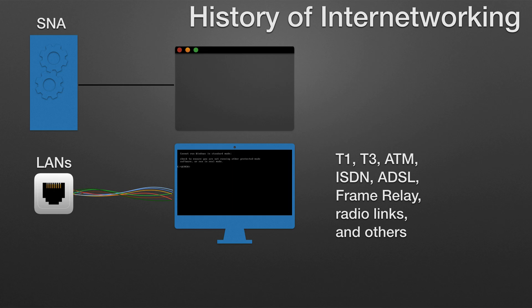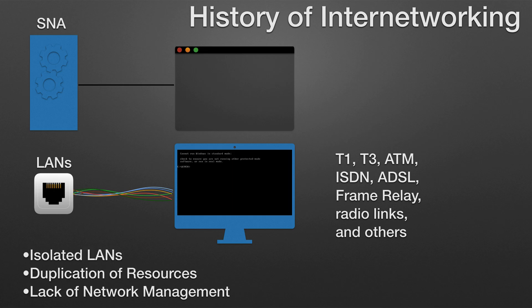Internet Working evolved as a solution to three key problems: isolated LANs, duplication of resources, and a lack of network management. Isolated LANs made electronic communication between different offices or departments impossible. Duplication of resources meant that the same hardware and software had to be supplied to each office or department, as did separate support staff. This lack of network management meant that no centralized method of managing and troubleshooting networks existed.